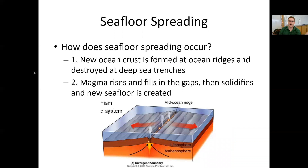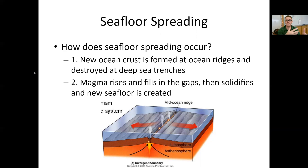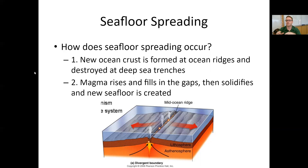So how does seafloor spreading actually work? In very simple terms: lava comes up from the mantle through the middle of our mid-ocean ridge. As that hot lava touches the water, it cools into rock and that rock slowly spreads out. At the edges of different plate boundaries, seafloor crust starts going back underneath our continental crust, re-melting, and the process starts again. At mid-ocean ridges we have crust formation; at deep sea trenches we have crust destruction. Magma rises up, fills the gaps of our mid-ocean ridge, solidifies, and creates new seafloor — that's seafloor spreading.